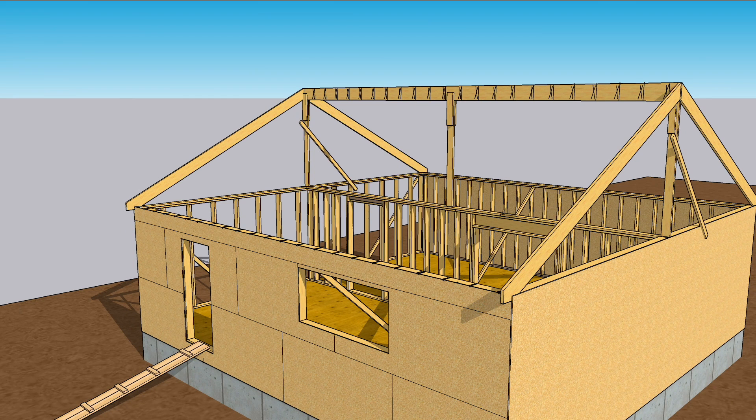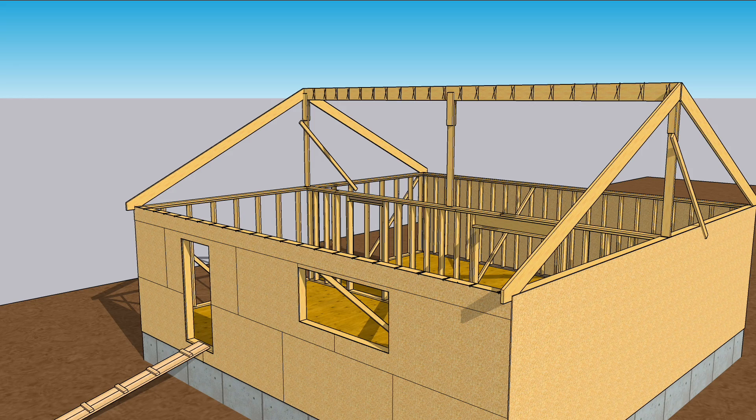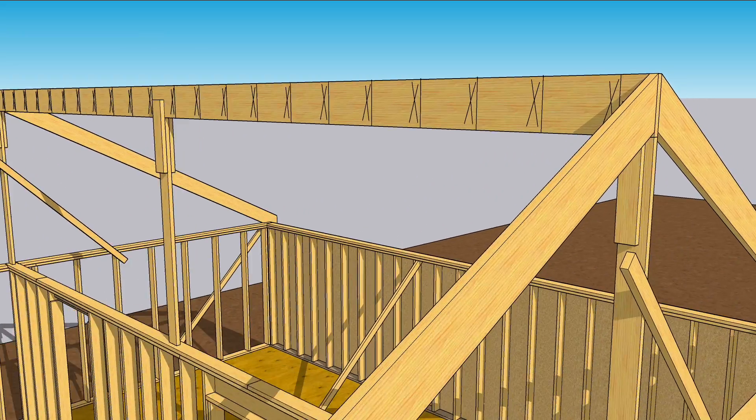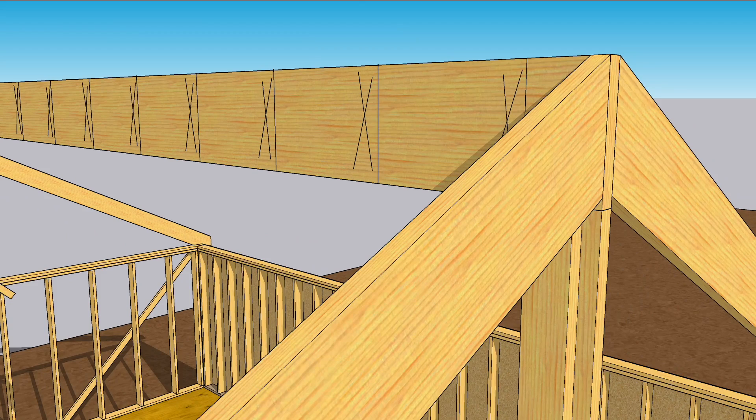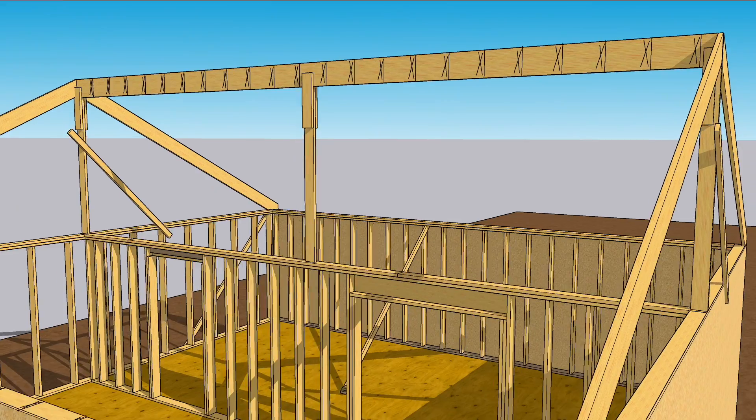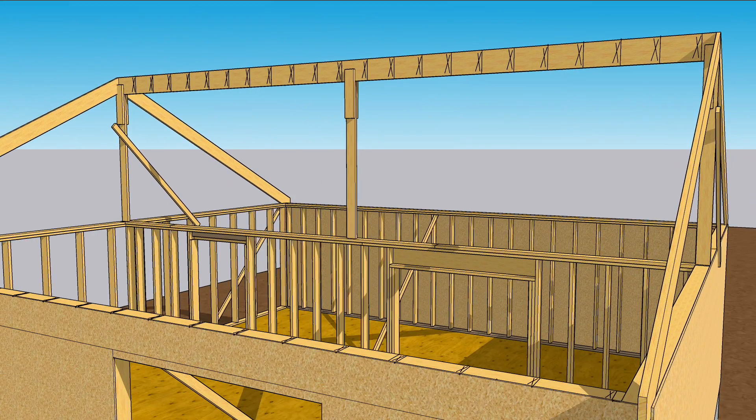Begin with 4 end rafters. Temporarily set them in place, perhaps with screws that are easy to remove or with sinkers that are not sunk. Again, adjust the ridge up or down until it fits the rafters perfectly, and then nail those rafters off. Face nailed through the ridge, and toe nailed into the top plates.